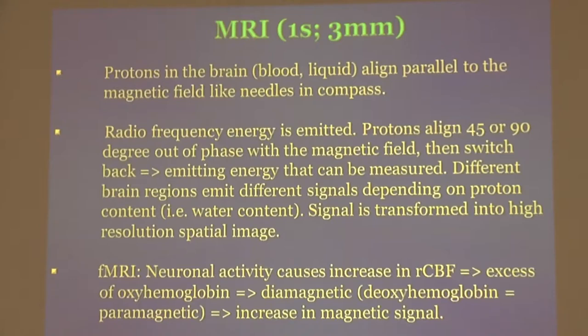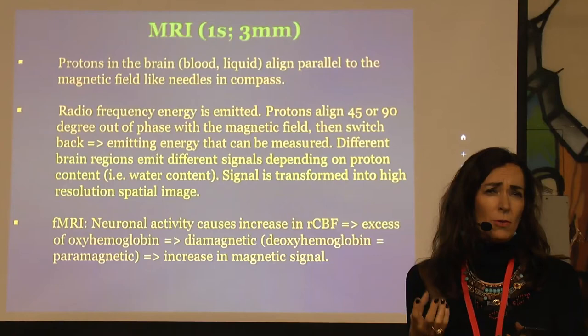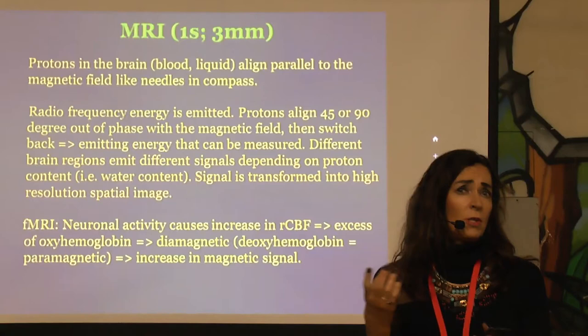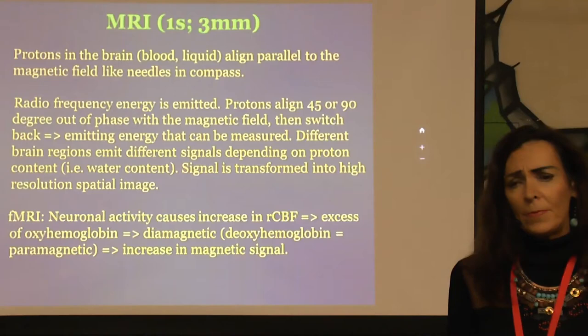In fMRI, you measure the brain in vivo while the child does tasks, like an attention task. The areas which are more active need more glucose and more oxygen, and the brain overcompensates by sending more oxygenated blood to these regions. Oxygenated blood gives a better magnetic signal than deoxygenated blood — so the red blood gives a better magnetic signal than the blue blood.